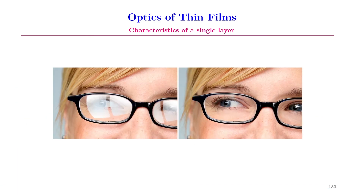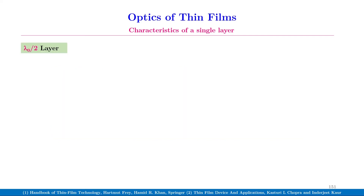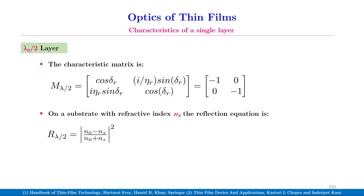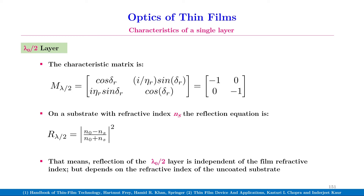This figure shows the use of an anti-reflection film on a pair of spectacles. We will now discuss thin films having a thickness equal to lambda0 divided by 2. The characteristic matrix M(lambda/2) turns out to be the identity matrix. On a substrate with refractive index Ns, the reflection equation turns out to be R(lambda/2) equal to the modulus of (n0 minus ns) over (n0 plus ns), the whole squared. That means the reflection of the lambda0/2 layer is independent of the film refractive index N1, but depends on the refractive index of the uncoated substrate.